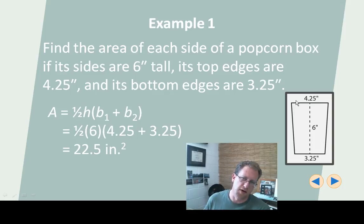You can look at this two different ways. You can say, well, what's the average of 3.25 and 4.25? And you would find that the answer to that, the average of 3.25 and 4.25, if you were to average them out, is 3.75. And you could say 3.75 times 6 and get the height times the average of the bases and it would be 22.5.